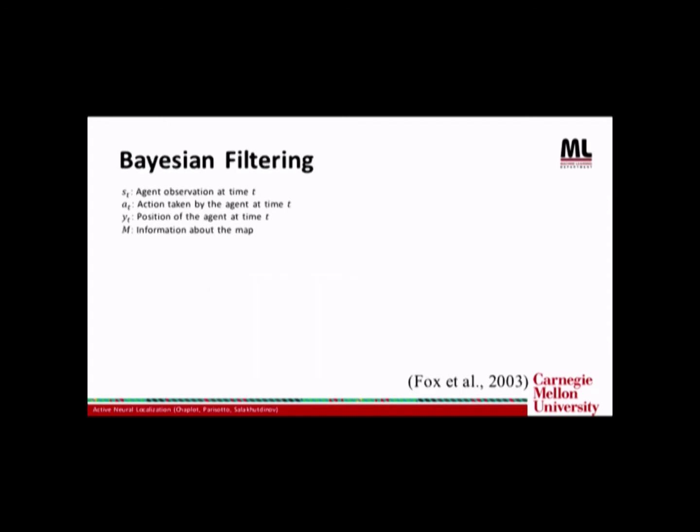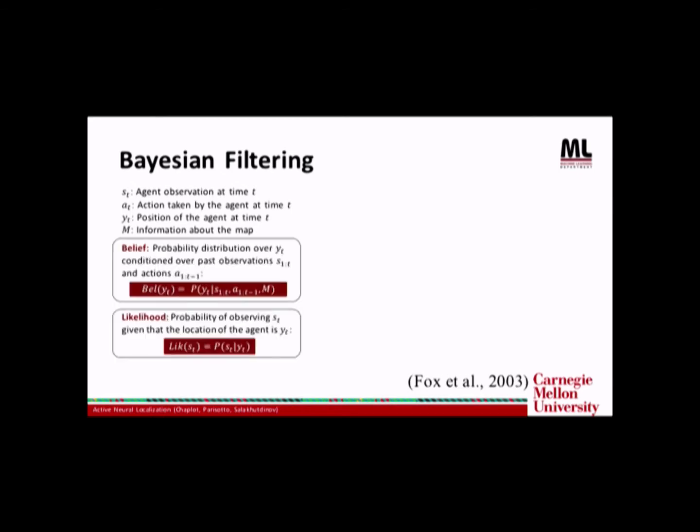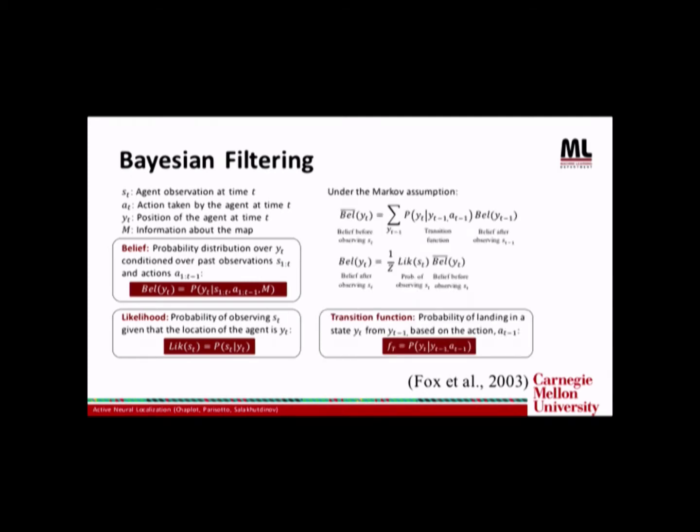So our model is based on a traditional localization technique called Bayesian filtering. In the framework of Bayesian filtering, the likelihood is defined to be the probability of observing an observation given the location of the agent. Under the Markov assumption, the belief can be recursively calculated using the two equations shown here. The first equation transforms the belief of the agent based on the action taken using a transition function, which gives the probability of landing in a state YT from YT-1 when the agent takes the action AT-1.